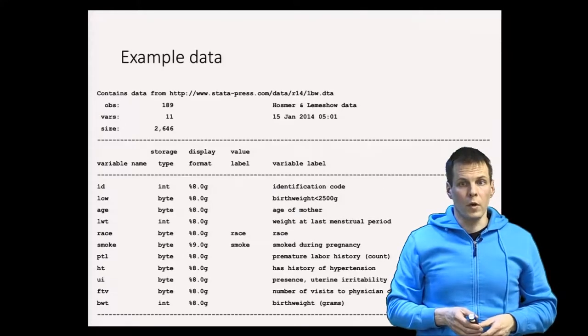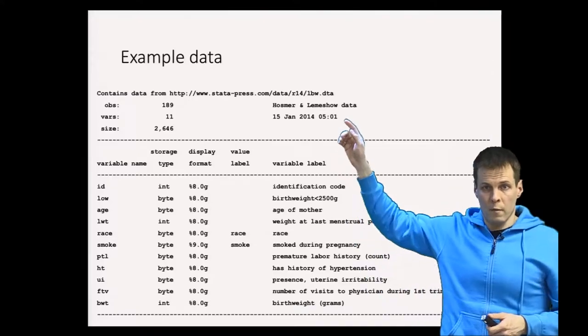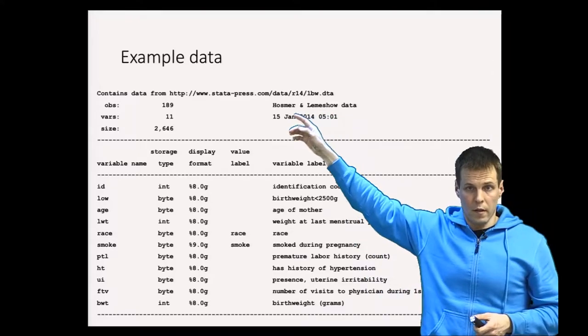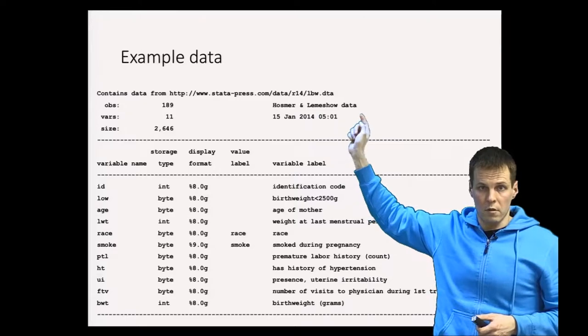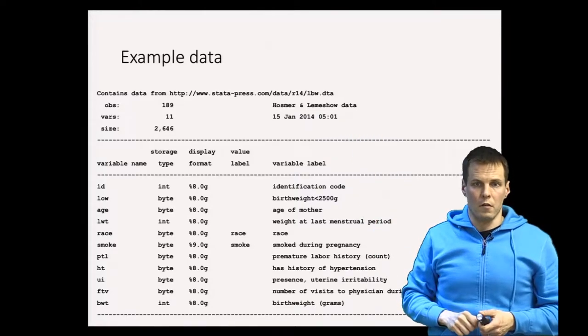To do plotting, we need some data and I will use the Hosmer and Lemeshow data. This is from a widely cited regression analysis book and the data are about babies born to different kinds of mothers.